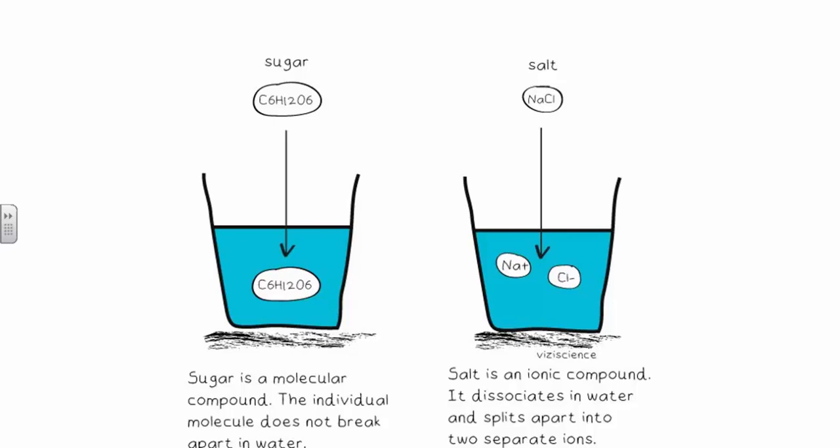On the other hand, salt is an ionic compound. It dissociates in water and splits apart into two separate ions. So when an ionic solute, such as salt or sodium chloride, is added to water, there are twice as many particles present in solution because the salt dissociates into separate ions. So the concentration of ions in a solution of salt water will be double that of a solution of sugar water, assuming we added the same number of moles of solute.